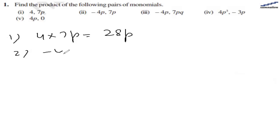Second part, we need to multiply -4p with 7p. So here -4 and 7 will get us -28, and p and p will get us p squared.